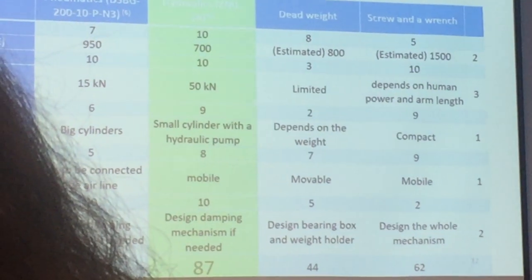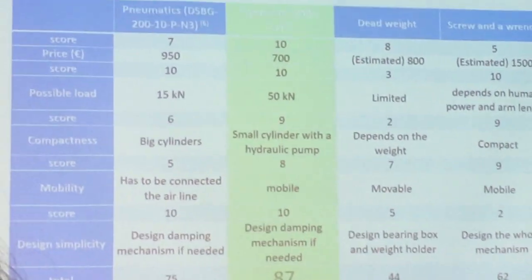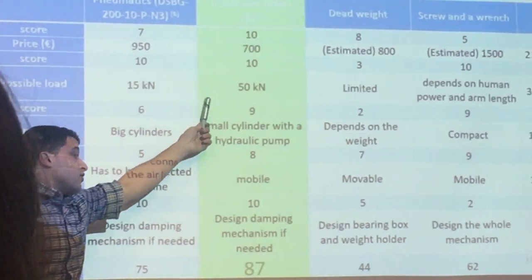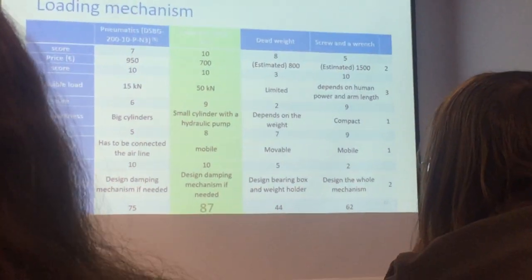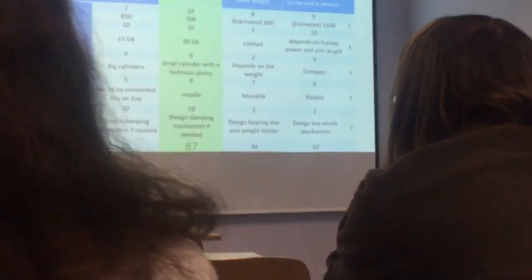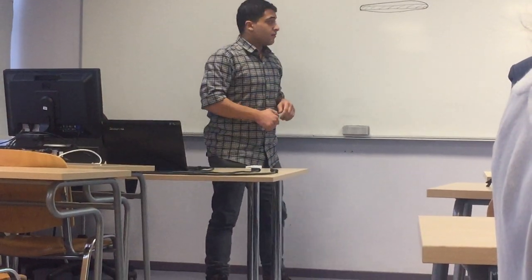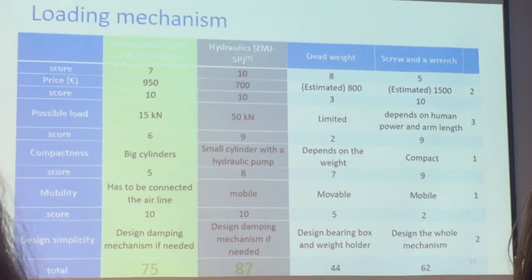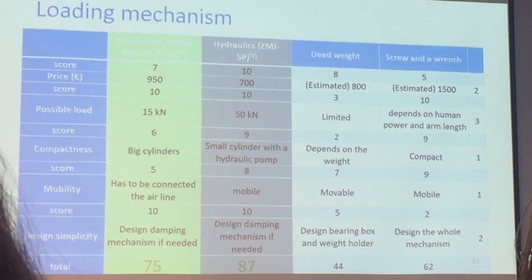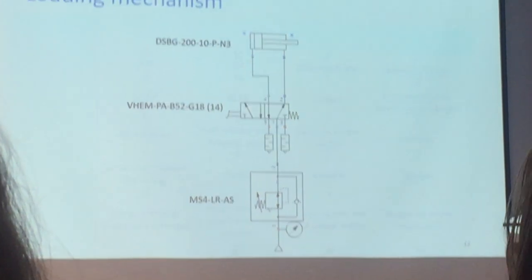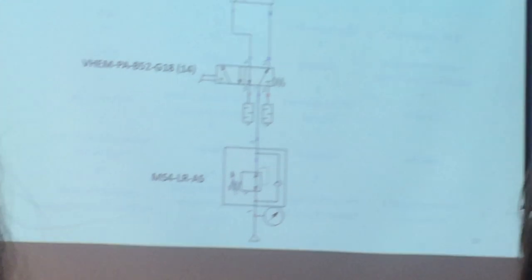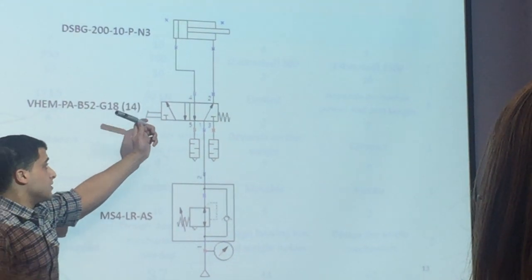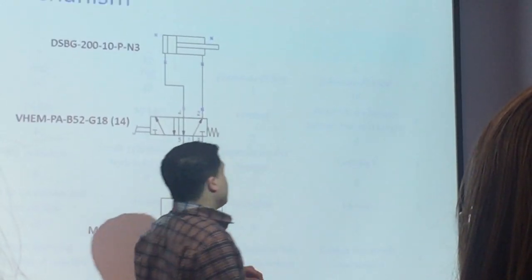We move to the next candidate: a pneumatic cylinder together with the compressed air source available in the lab. We draw the pneumatic circuit, which has three main components: a pressure regulator, a 5/2-way valve, and a double-acting cylinder.